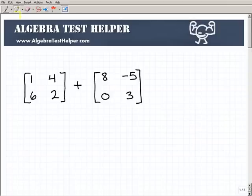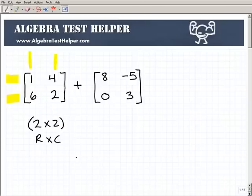Now let's talk about adding two matrices. If you notice here, each one of these has rows and columns. This one has two rows and two columns, so we would call this a 2 by 2 matrix. We write it this way: 2 by 2. This is the rows and this is the columns.